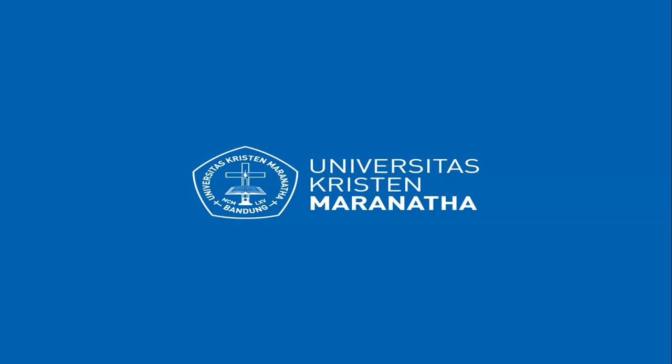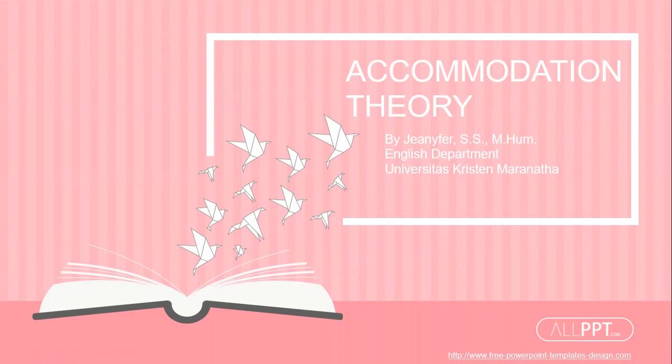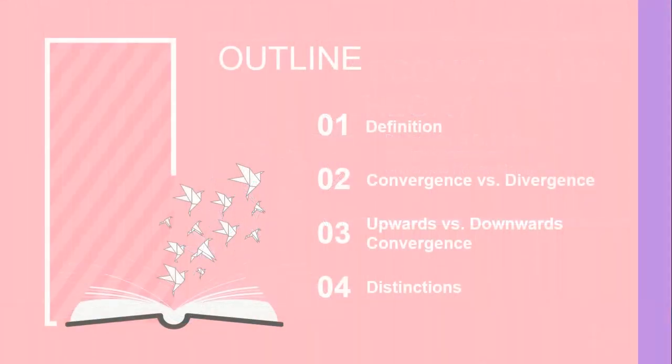Hi everyone, this is Jennifer and we are back in another episode of the sociolinguistics series. Today we're focusing on language variety, especially the accommodation theory. In this video I'm going to talk about the definition of accommodation theory, then the key terms — convergence and divergence — and then we're going to discuss what it means when you do upwards or downwards convergence. We will end with the distinctions in doing the conversation accommodation theory.